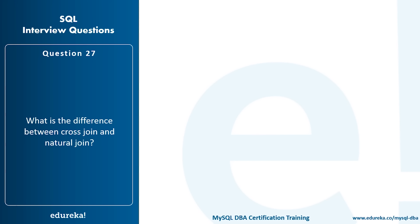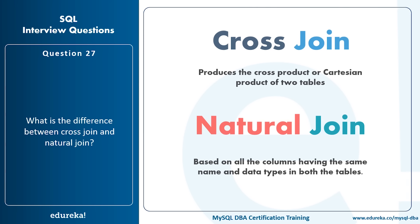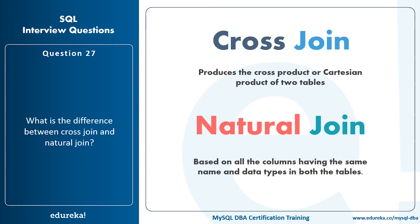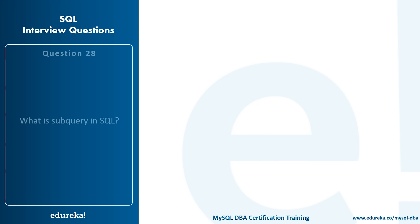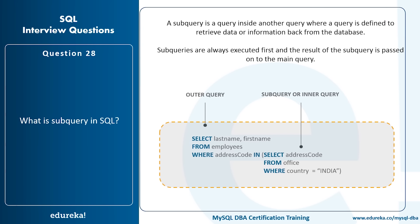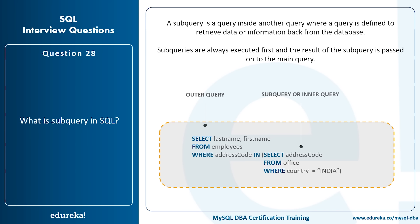What is the difference between a CROSS JOIN and a NATURAL JOIN? The CROSS JOIN produces the cross product or Cartesian product of two tables, whereas the NATURAL JOIN is based on all columns having the same name and data types in both tables. What is a subquery in SQL? A subquery is a query inside another query, defined to retrieve data from the database. Subqueries are always executed first, and the result is passed on to the main (outer) query.